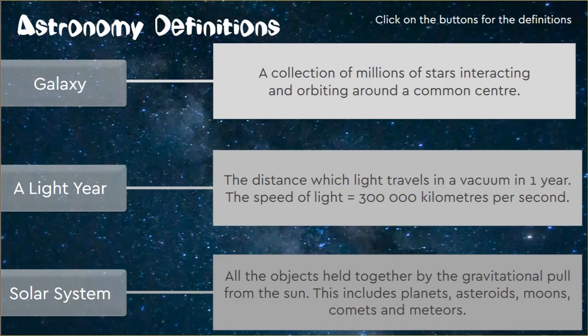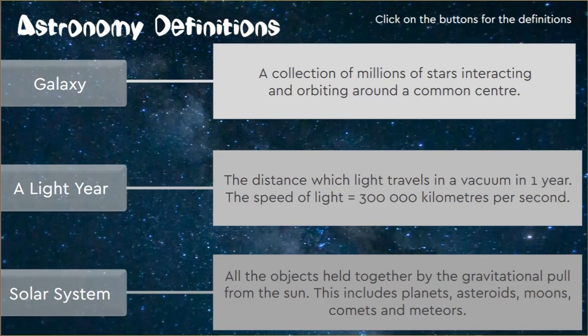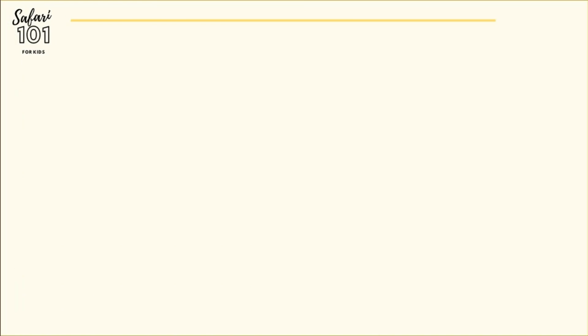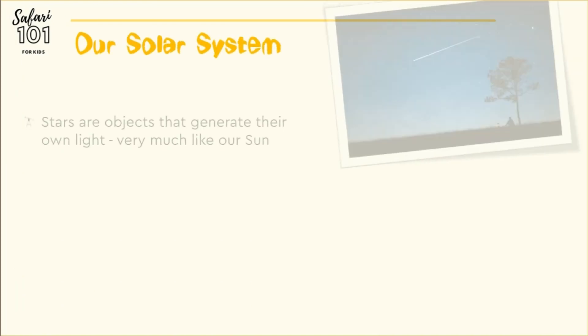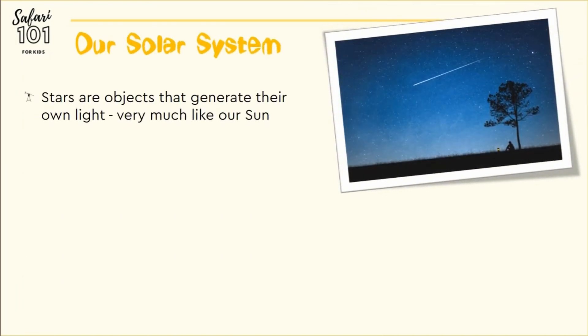The solar system includes all our planets, asteroids, moons, comets and meteors. Our solar system. Stars are objects that generate their own light, very much like our own sun.